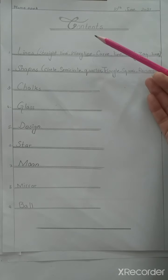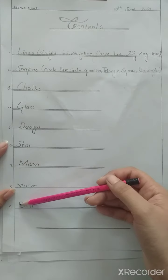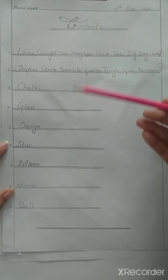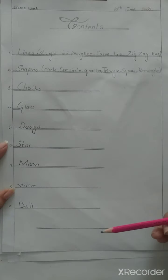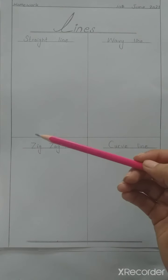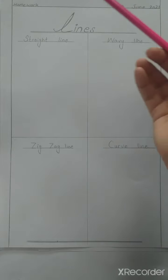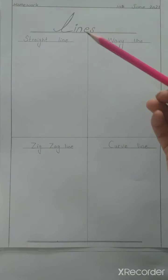Students, you have to draw a total of nine diagrams in your copy. Students, you have to write these contents neatly in your copy and at the end you must add a finishing line. Now students, go to the next page. Prepare the page with margin line, date line, mention the date, and give the heading of Lines.